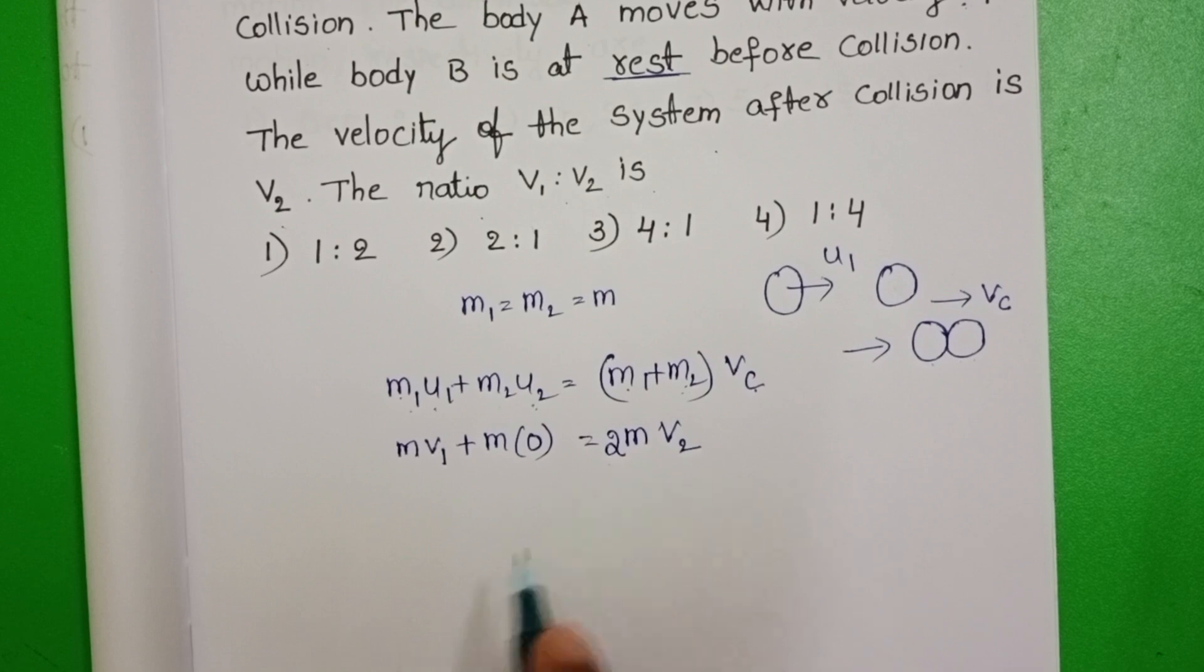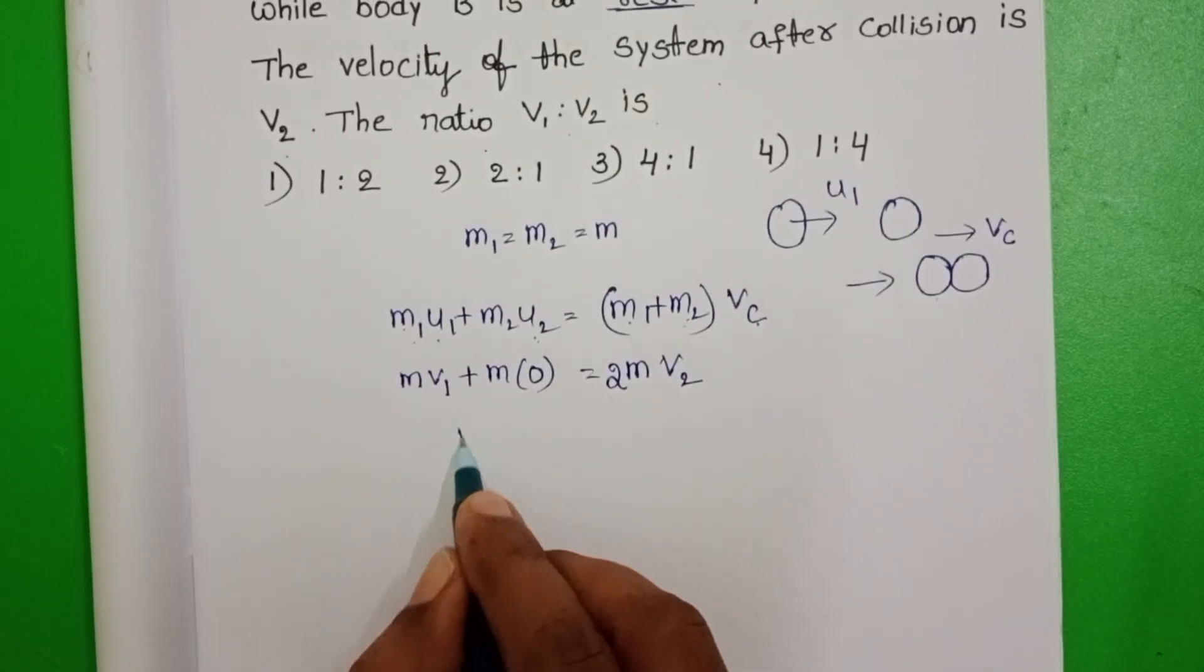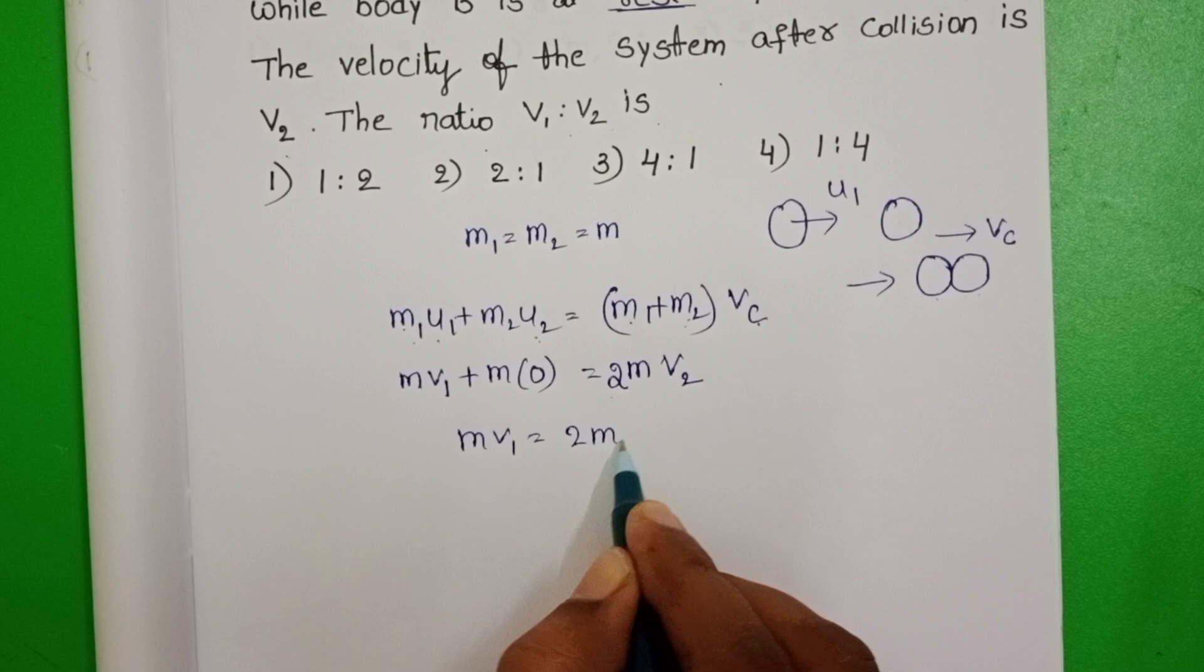M plus M, mass becomes 2M. M V1 equals 2M V2.